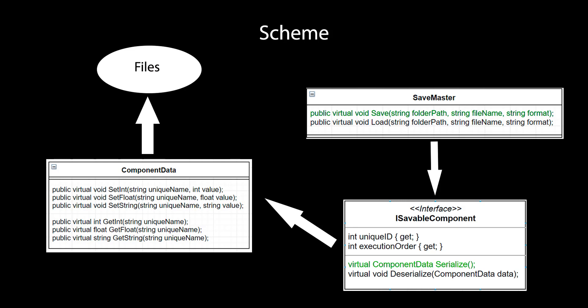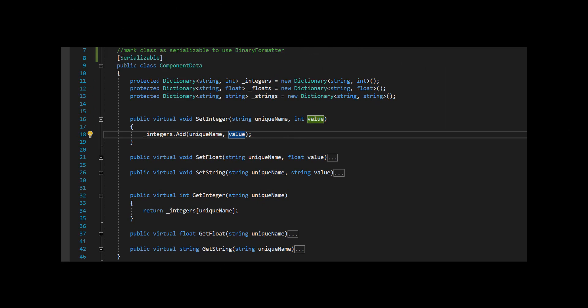Then the reverse process occurs. To load the game you need to call the load method in save master. Inside this method, data loads from a file, then it searches all components that implement the iSavable component interface, then calls the deserialize method for all found components. Now I will show you the source code with my comments to clearly describe the work of the components.